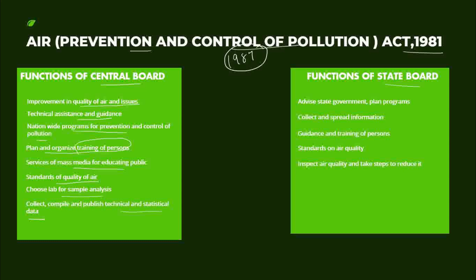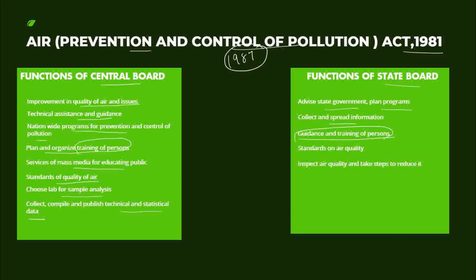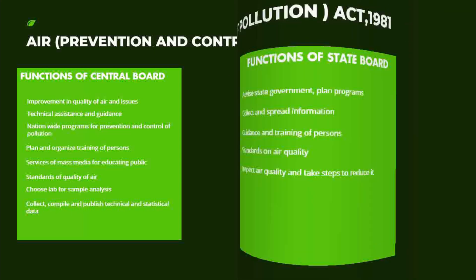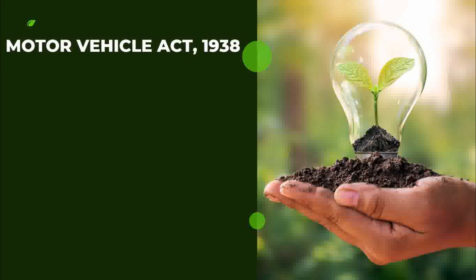The State Board has power at the state level. They plan programs at the state level and advise the state government about air pollution. They collect and spread information about air pollution and give guidance and training to personnel. They set standards for the quality of air, inspect air quality, and take steps to reduce pollution. If there is high pollution, they provide steps for the reduction of air pollution.